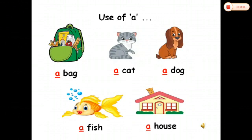Similarly, the word 'dog' — you can see a picture of a dog, and 'dog' starts with D, so you will use 'a' with it: a dog. In the next picture you can see 'fish'. Fish starts with the letter F, which is a consonant, so you will use 'a' with it: a fish. The last picture is 'house'. It starts with the letter H, which is a consonant, so you will use 'a' with it. Let's revise: a bag, a cat, a dog, a fish, a house.